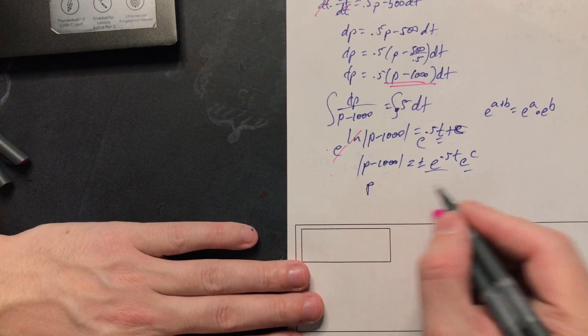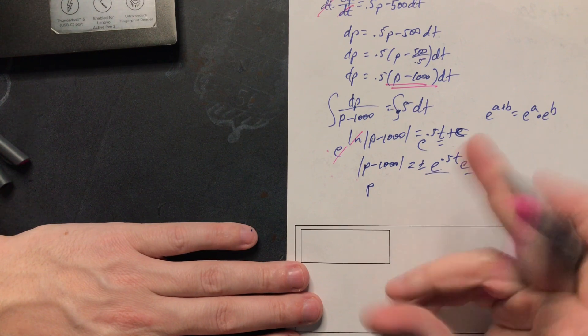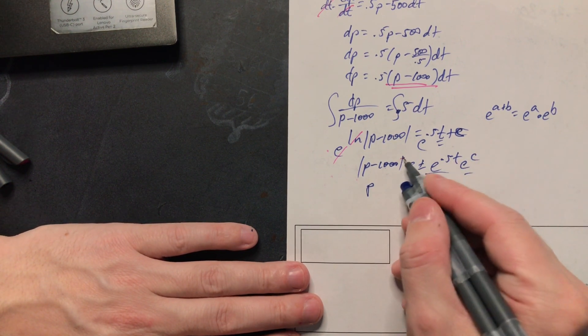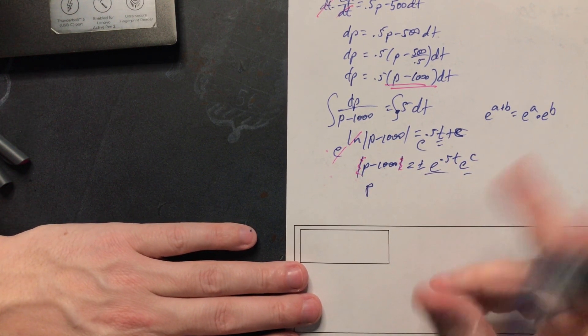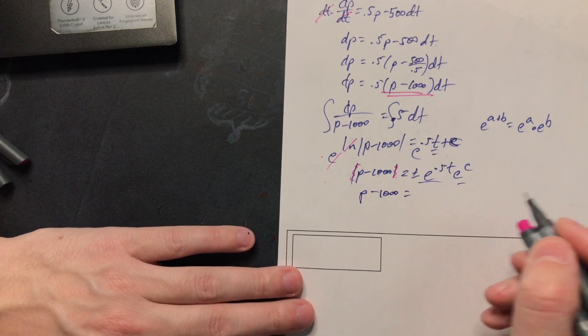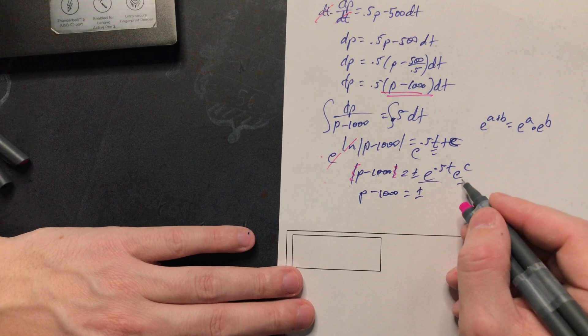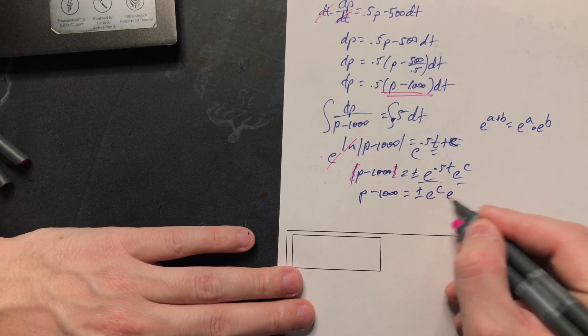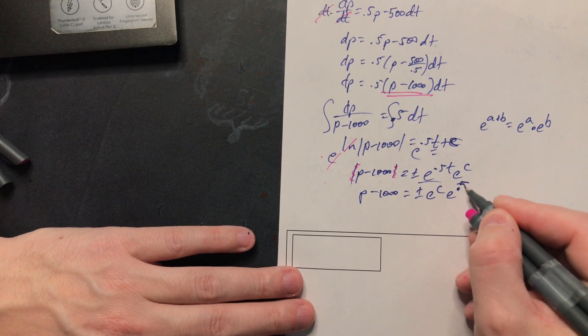Then you're going to have p. Now when I do the plus or minus here what that allows you to do is you can drop these absolute value bars. You don't need them anymore. So you have p minus a thousand equaling plus or minus and then this is e to the c and then e to the 0.5 t.